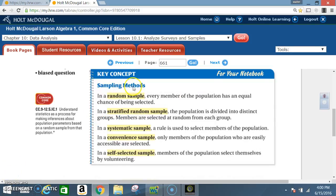Key concept: sampling methods. In a random sample, every member of the population has an equal chance of being selected. In a stratified random sample, the population is divided into distinct groups. Members are selected at random from each group. In a systematic sample, a rule is used to select members of the population. In a convenient sample, only members of the population who are easily accessible are selected. In a self-selected sample, members of the population select themselves by volunteering.